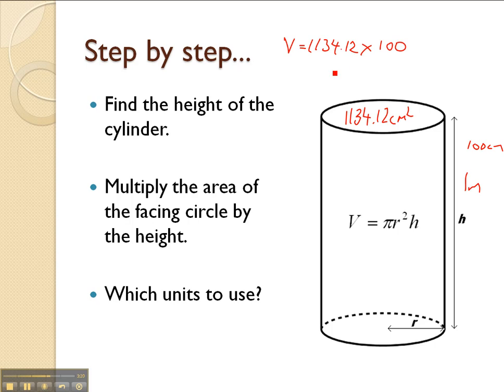Which would give you a value of 113,412 centimetres cubed. It's important to note that the units for volume are centimetres cubed. Area is centimetres squared, volume is centimetres cubed.